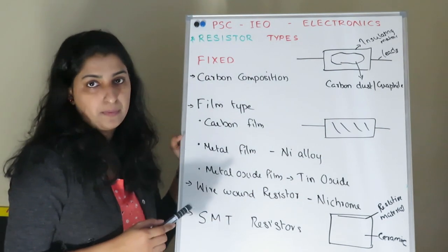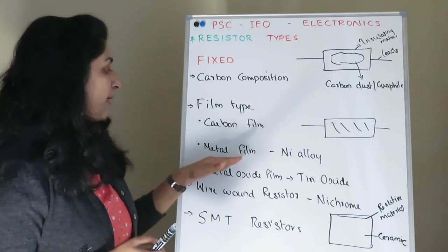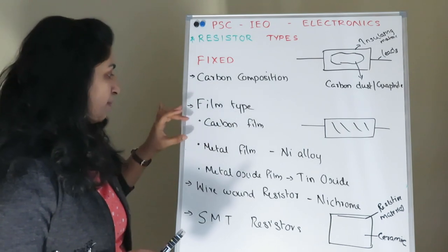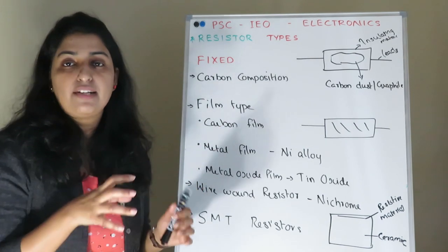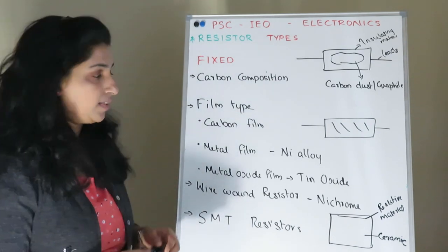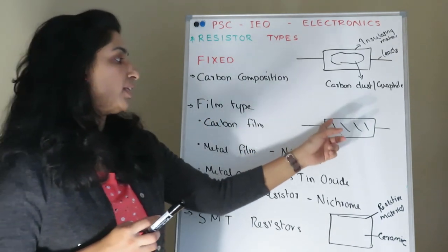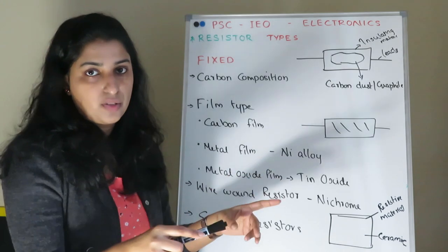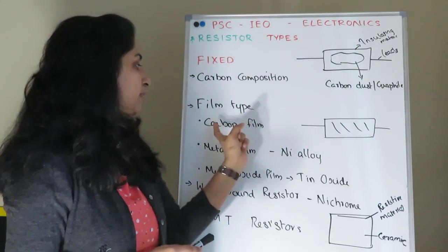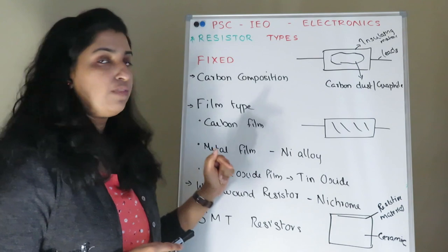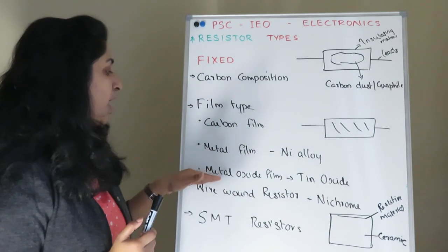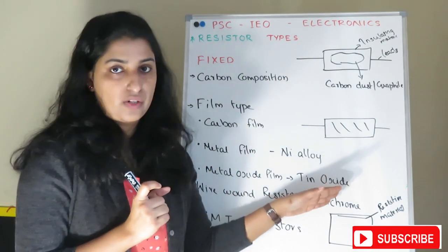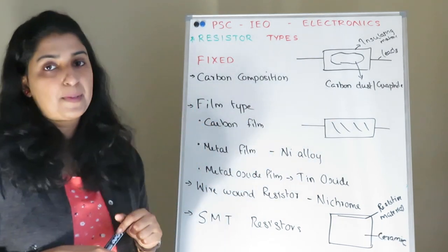The second type is film-type resistors: carbon film resistors, metal film resistors, and metal oxide film resistors. A particular resistive material is deposited onto a substrate. For carbon film resistors, carbon is deposited; for metal film, a metal alloy is used; and for metal oxide film, a metal oxide coating is applied.